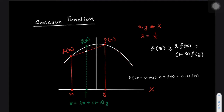First, we need to evaluate the function f at this linear combination of x and y. Evaluating the function at this point gives us f of z. Now we take a look at what f of x and f of y are, and then take a linear combination of f of x and f of y. This straight line represents all of the possible linear combinations of f of x and f of y, given that lambda is between 0 and 1. For our given lambda of one half, this is our relevant point, and we can see that f of z is greater than this linear combination of f of x and f of y.